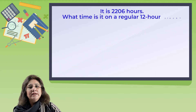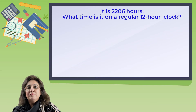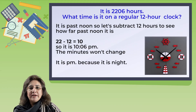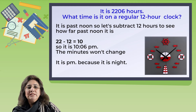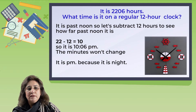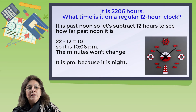Let's look at another example. It is 2206 hours — what time is it on a regular 12-hour clock? It is past noon, so let's subtract 12 hours to see how far past noon it is: 22 minus 12 equals 10. So it is 10:06 PM. The minutes won't change. It is PM because it is night.